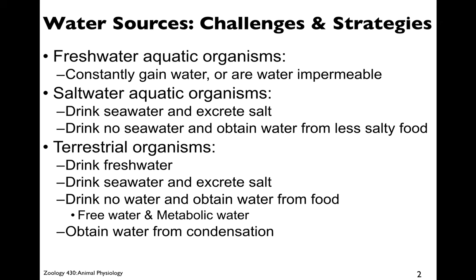Terrestrial organisms can either drink fresh water, or if marine, drink seawater and excrete salt, or if no water is available, obtain water from food — both the free water in food, which might be around 75% water, and metabolic water from metabolism. Remember that glucose plus oxygen gets converted into CO2 plus water, so any time you metabolize food you can obtain water. Some animals also obtain water from condensation — mainly insects.